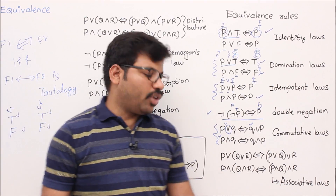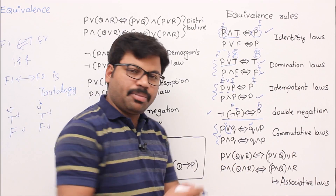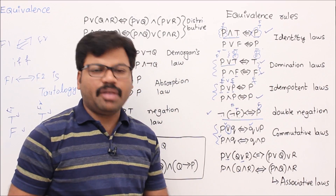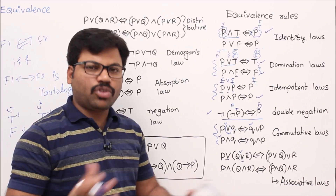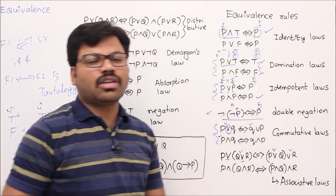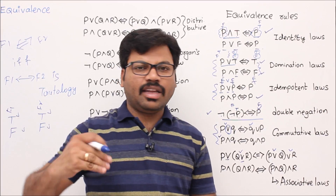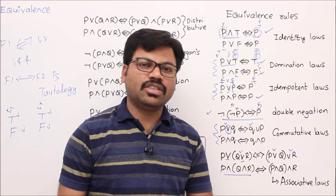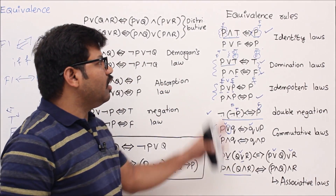Now come to associative law: (p∨q)∨r ≡ p∨(q∨r). From now onwards, in an expression with multiple OR operators, you can apply any grouping first. If you apply q∨r first you get some truth value, and if you apply p∨q first then OR r, you get the same truth value. That is the associative law. Similarly, (p∧q)∧r ≡ p∧(q∧r).